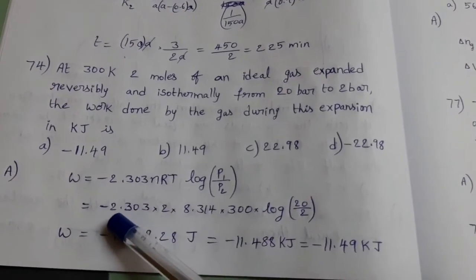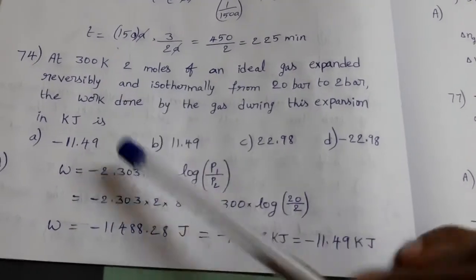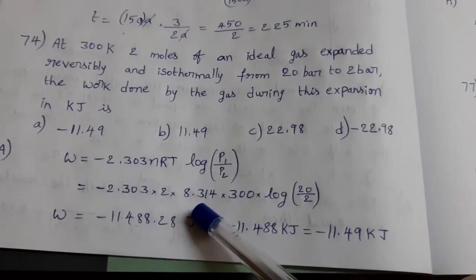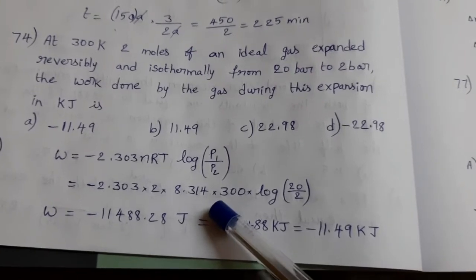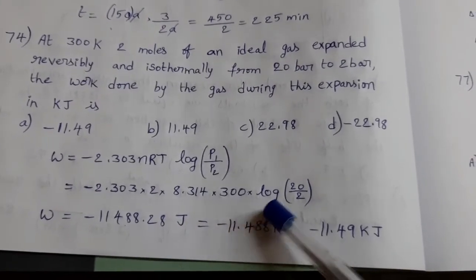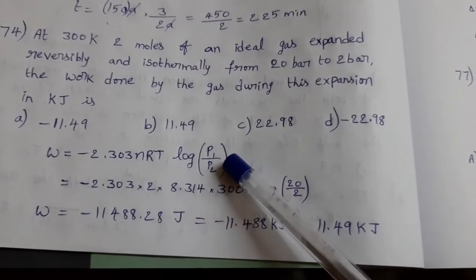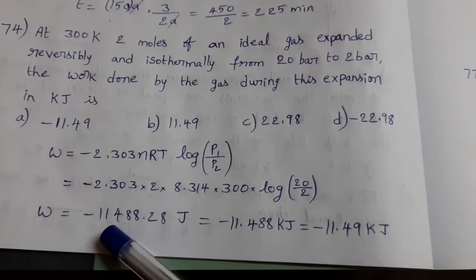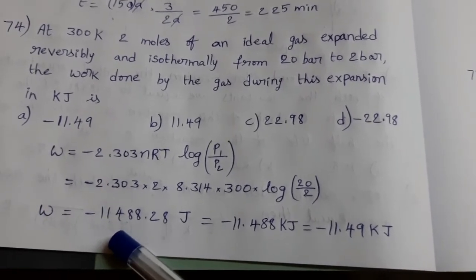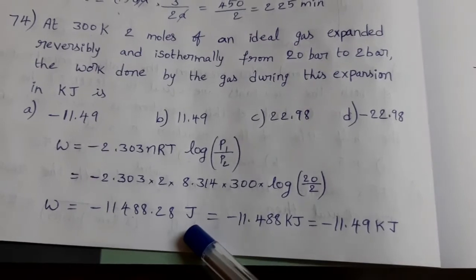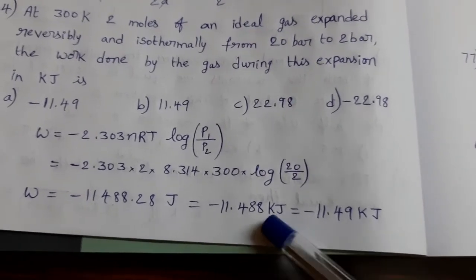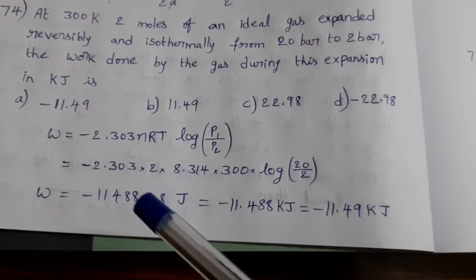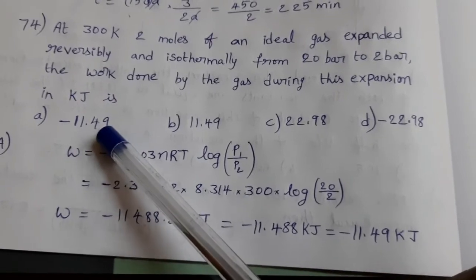Substitute the values: minus 2.303 into 2 moles, R value universal gas constant 8.314 in joules, temperature 300 Kelvin, log of P1 means 20, P2 means 2 bar. Then w equals minus 11,488.28 joules. In kilojoules its value is minus 11.49 kilojoules. Option A is the answer.